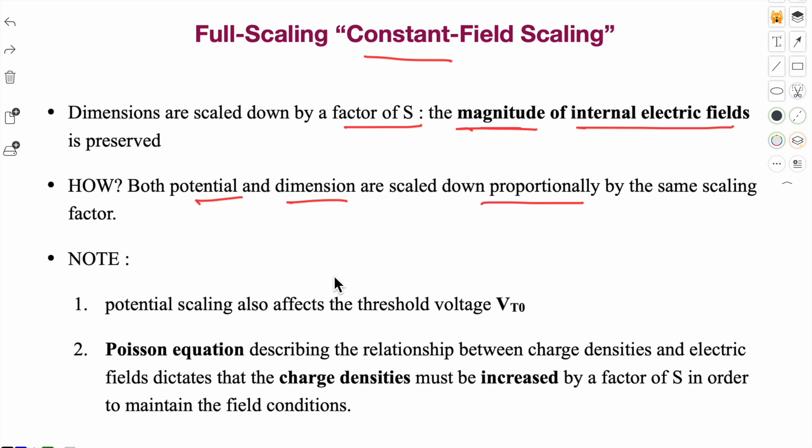Note down two important points. First, when we are doing potential scaling, reducing voltage, then it will also affect the threshold voltage. Threshold voltage will not remain constant, we will have to reduce it for constant field scaling. Second point is that to maintain the constant field condition, we need to increase the charge densities by a factor of S. So charge densities will be increased by the same scaling factor.